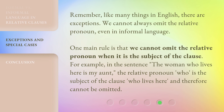Remember, like many things in English, there are exceptions. We cannot always omit the relative pronoun, even in informal language. One main rule is that we cannot omit the relative pronoun when it is the subject of the clause. For example, in the sentence 'the woman who lives here is my aunt,' the relative pronoun 'who' is the subject of the clause 'who lives here,' and therefore cannot be omitted.